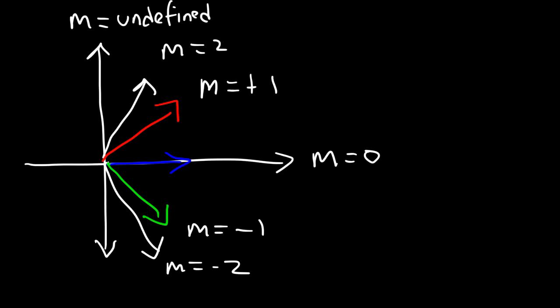If you have an angle that's less than 45 degrees, the slope is going to be a fraction — it could be a half or a third, but it's less than 1. Now consider this problem.